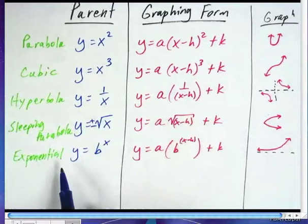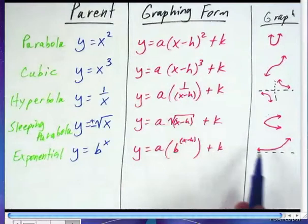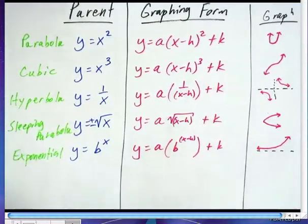Then the last one being the exponential, y equals b to the x, and so the equation will be y equals a times b to the x minus h, and then plus k, and it's going to curve up if it's a positive a value from your asymptote.